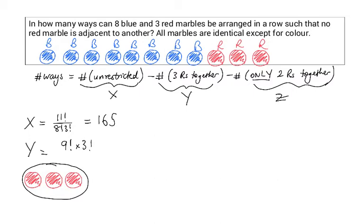Now this is correct if the blue marbles and the red marbles were all different. But because the blue marbles are identical and the red marbles are identical, we need to divide, as was the case with x, by 8 factorial to account for the 8 identical blue marbles and 3 factorial to account for the identical red marbles. And this gives us 9.